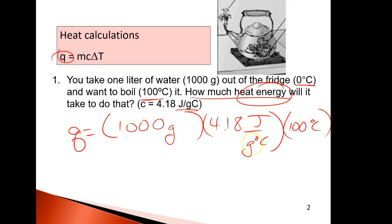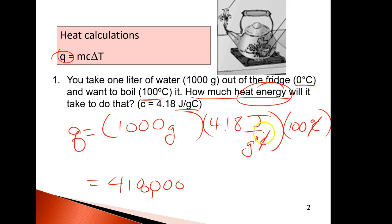The reason I wrote the fraction that way for the specific heat unit is to show you what happens to the units. When you multiply this all out, you get 4.18 times 1,000 times 100, which is 418,000. Degrees Celsius cancels out because it's on the bottom of a fraction. Grams and grams cancel out. So the units left are joules.